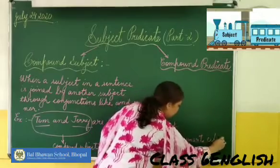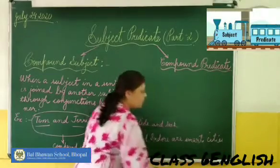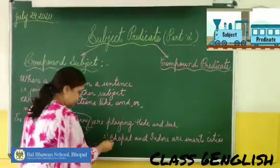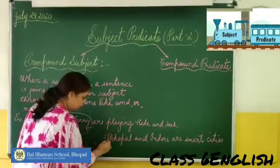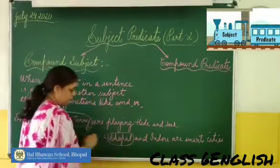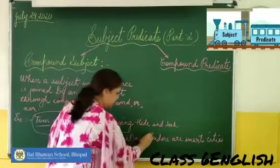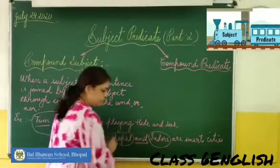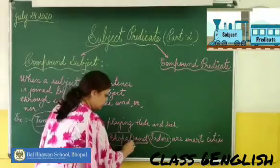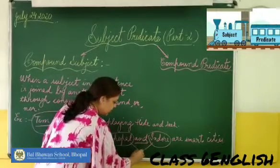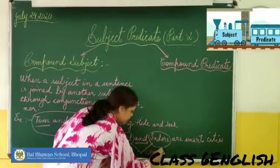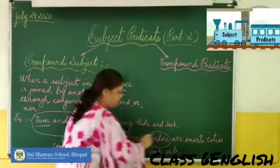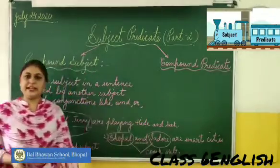Another example: 'Bhopal and Indore are smart cities.' Bhopal is the first subject and Indore is the second subject. Both are connected with the conjunction 'and,' so this sentence has a compound subject in it.